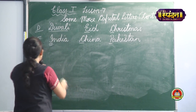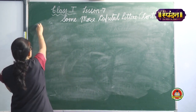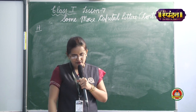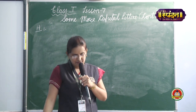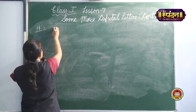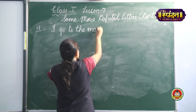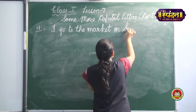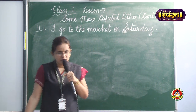Now moving on to Exercise H: Capital letters are used to begin a sentence. Rewrite these sentences using capital letters wherever necessary. So wherever capital letters are necessary, we have to write that letter in capital. 'I go to the market on Saturdays.' So 'I' you will put in capital, and 'Saturdays' — Saturday is a name of a day of the week — so you will put it in capital.